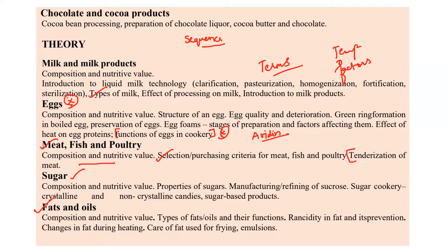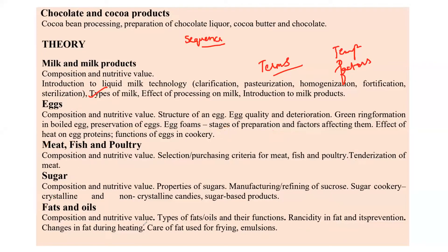Coming to fats and oils, you will most likely get questions related to rancidity — for example, acid values and various rancidity indexes. You should also know the different changes that happen in a fat when you fry with it multiple times by repeated heating, which leads to increases in trans fat content and consequently cardiovascular diseases.